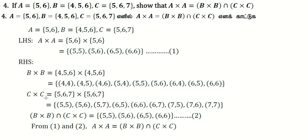Now C×C. C = {5,6,7}. The cross product gives: (5,5), (5,6), (5,7), (6,5), (6,6), (6,7), (7,5), (7,6), (7,7).